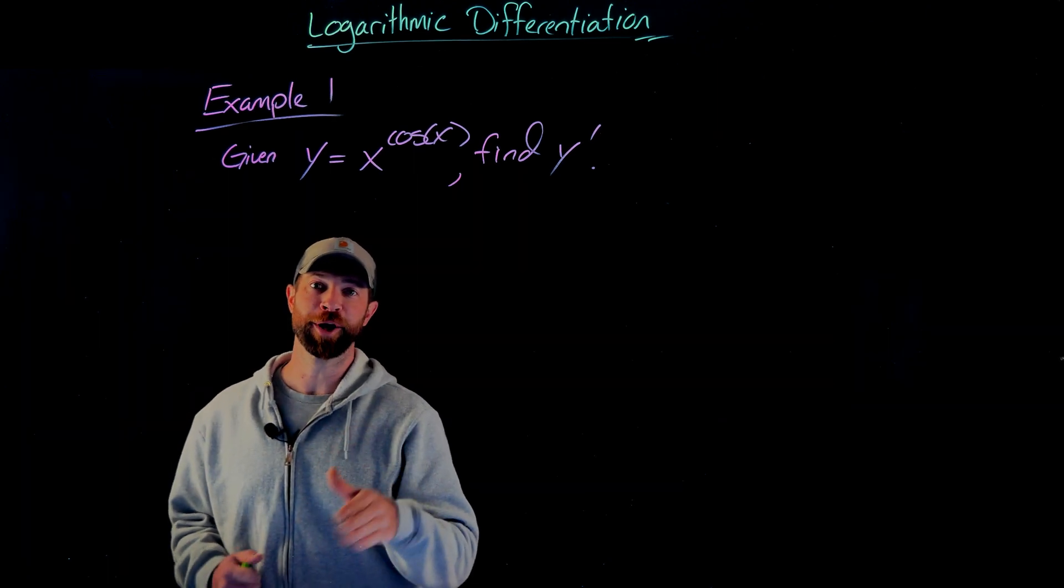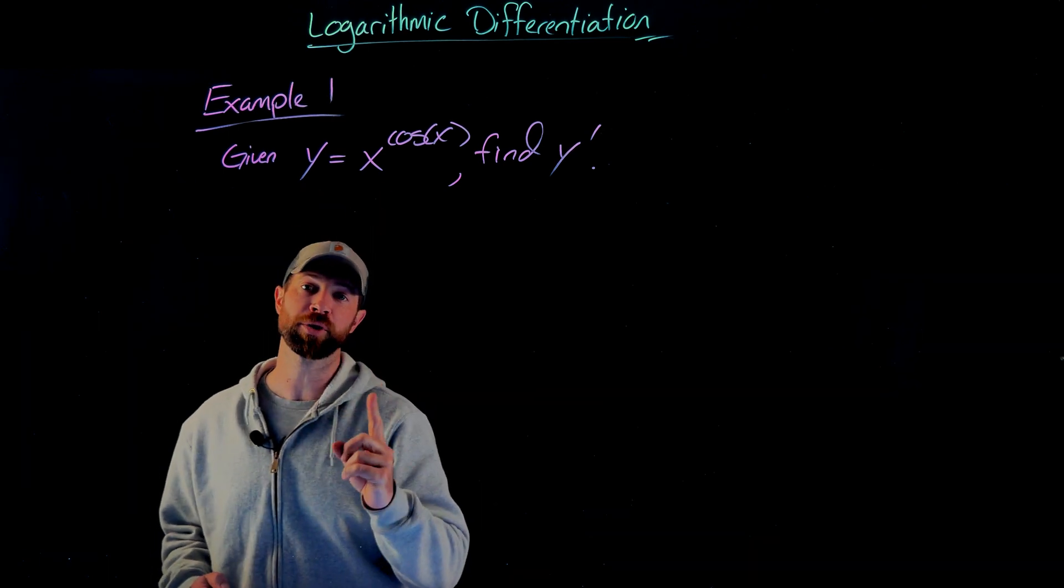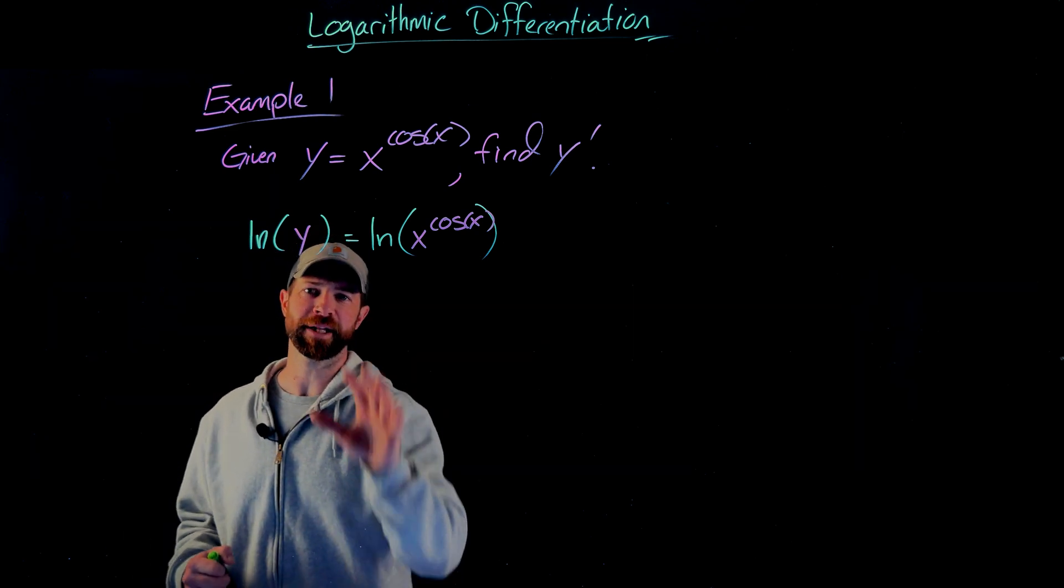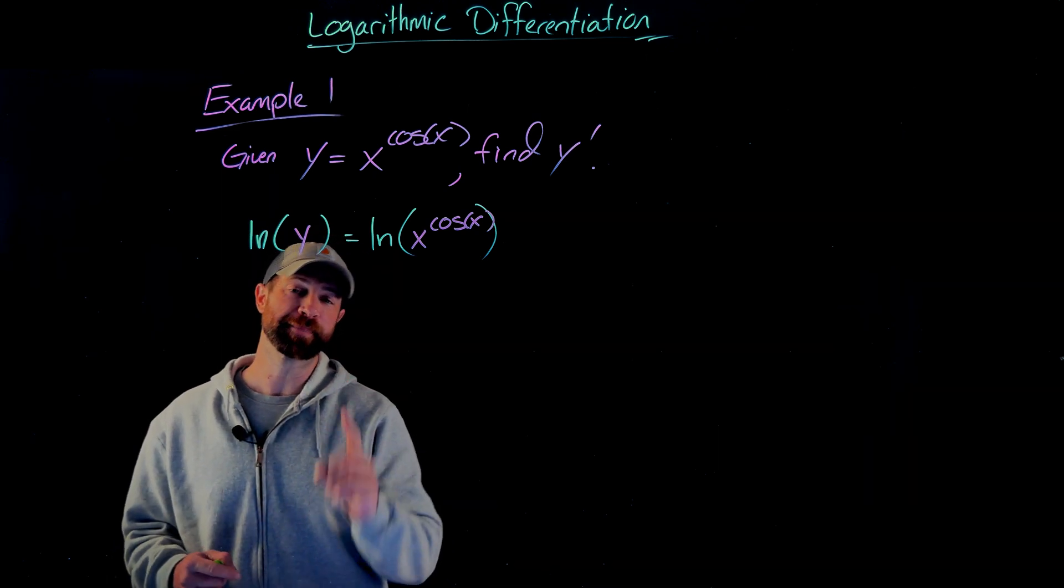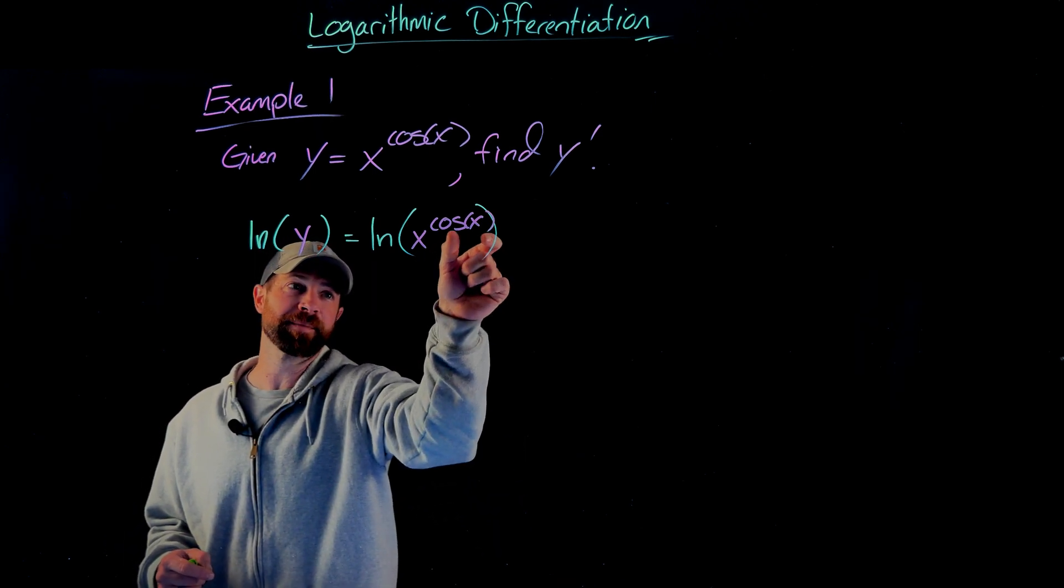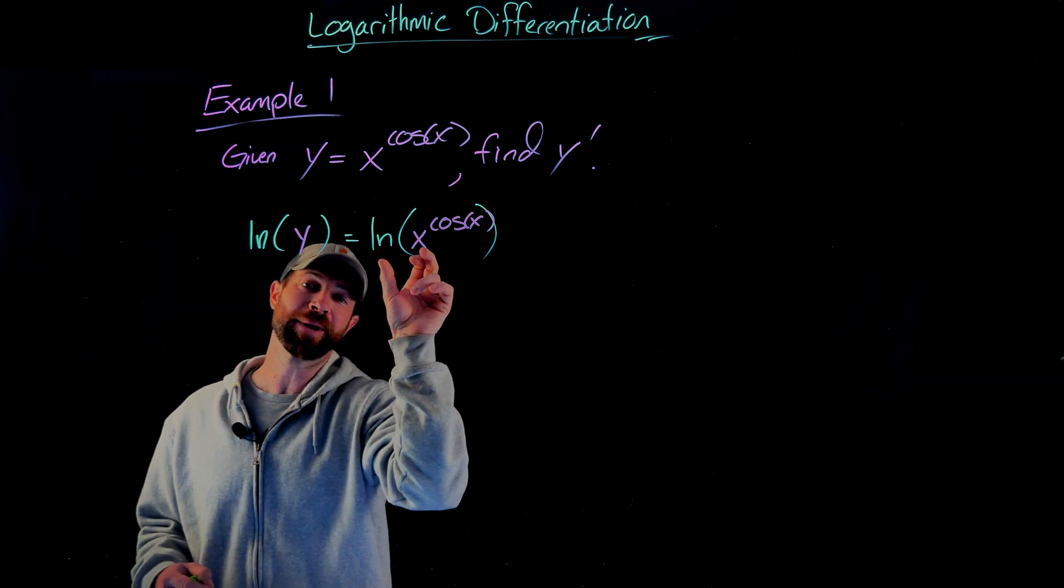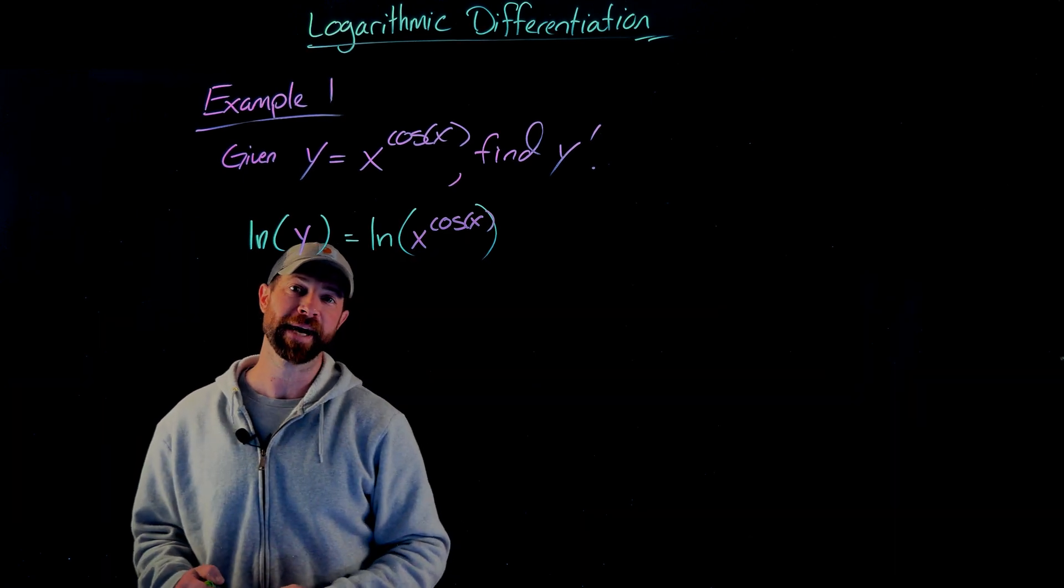In order to perform logarithmic differentiation, what we're going to do is apply the natural log to both sides of this equation. And while at first it might seem like, well, why do we unnecessarily add in some more complication here? What we're going to do is apply the property of logarithms that says if we have the logarithm of something with an exponent, we can bring that exponent out front. So I'm going to rewrite the right-hand side of this as the cosine of x times the natural log of x.